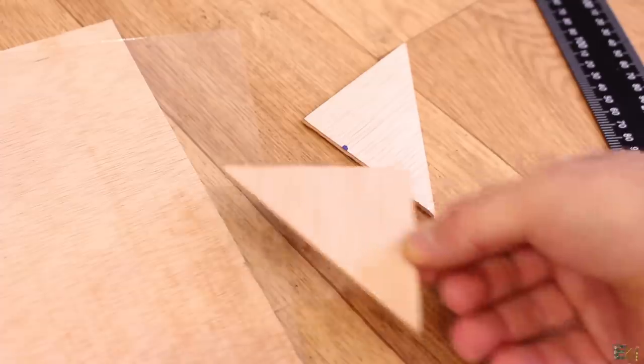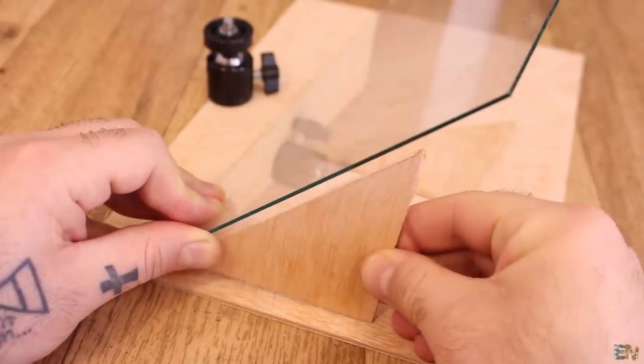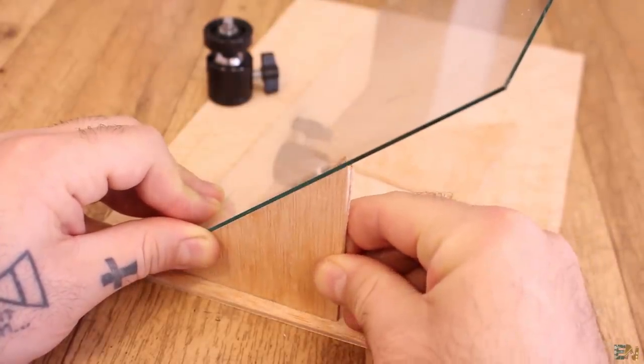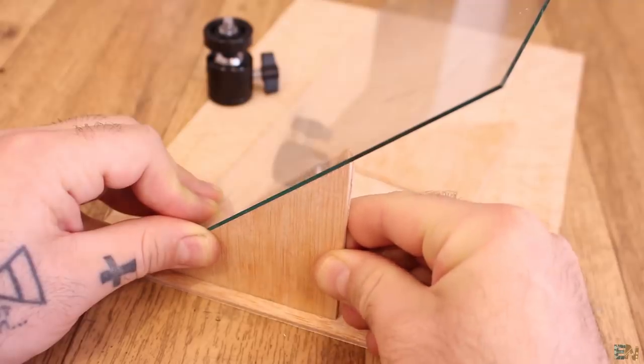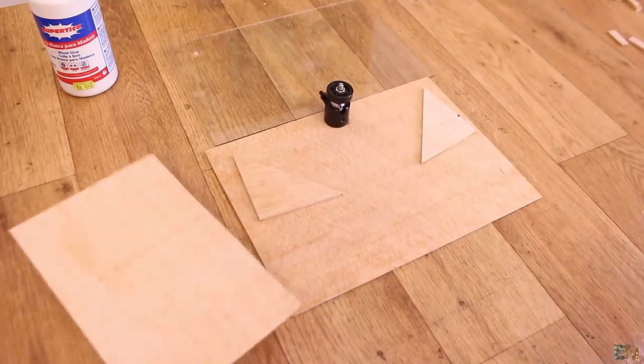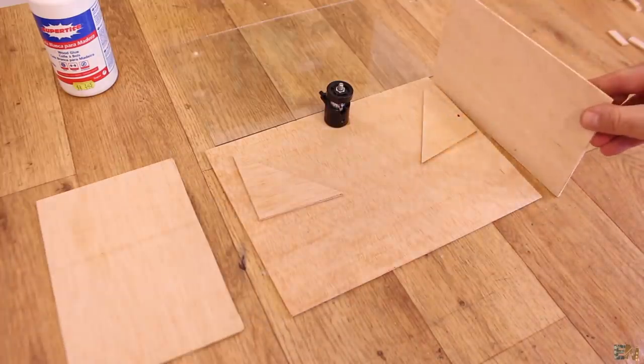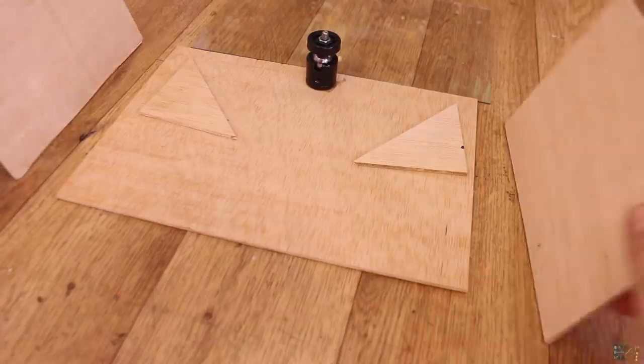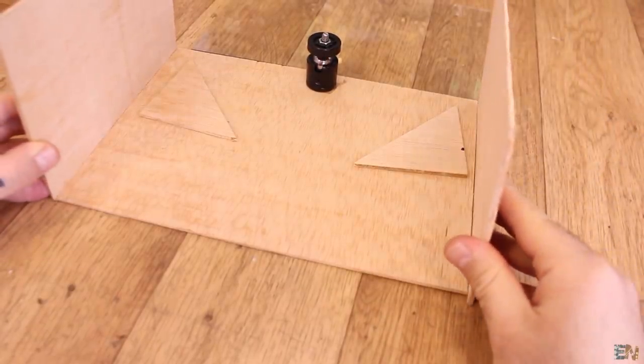Then we need to cut two triangles with 45 degree angles as well. This will support the glass. And for the sides, we cut two more rectangles that will give more strength to the prompter and also support the black material that we will place over later.